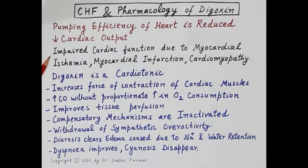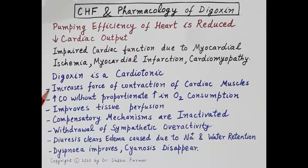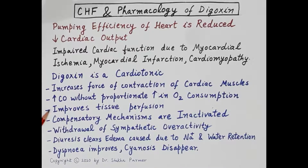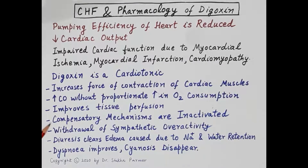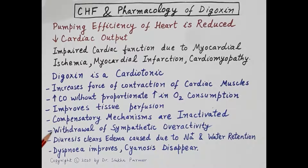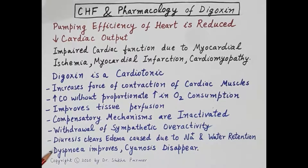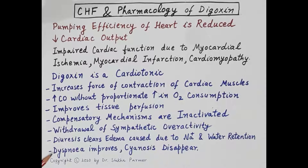Cardiac function is impaired due to myocardial ischemia, myocardial infarction, or cardiomyopathy. Digoxin is a cardiotonic that increases the force of contraction of cardiac muscles, raising cardiac output without a proportionate increase in oxygen consumption. Improved cardiac output improves tissue perfusion, inactivates compensatory mechanisms like the renin-angiotensin-aldosterone system, withdraws sympathetic overactivity, induces diuresis to clear edema, reduces pulmonary edema, improves dyspnea, and resolves cyanosis.